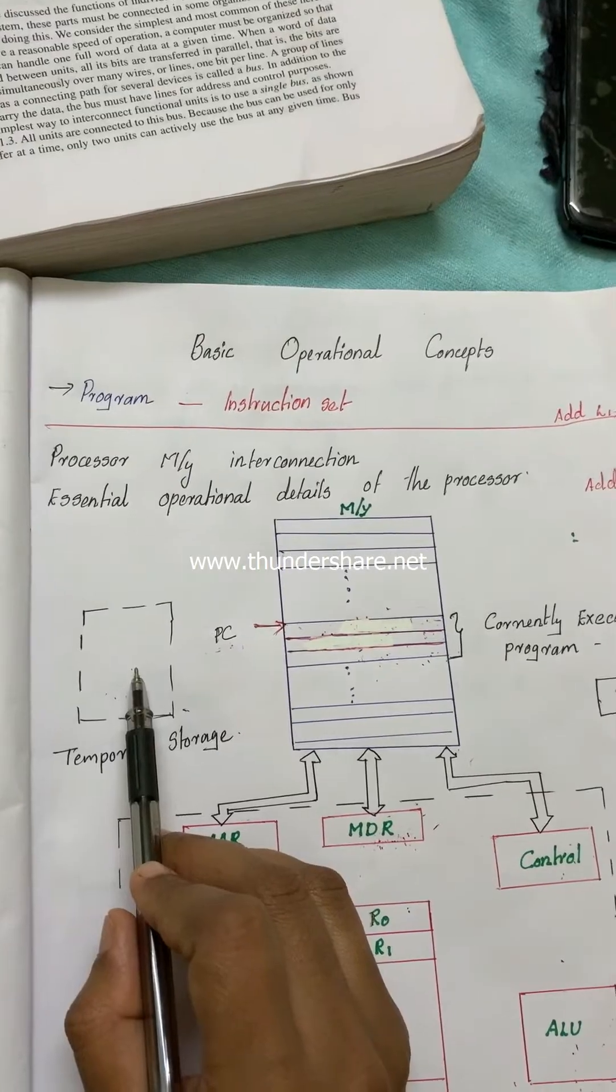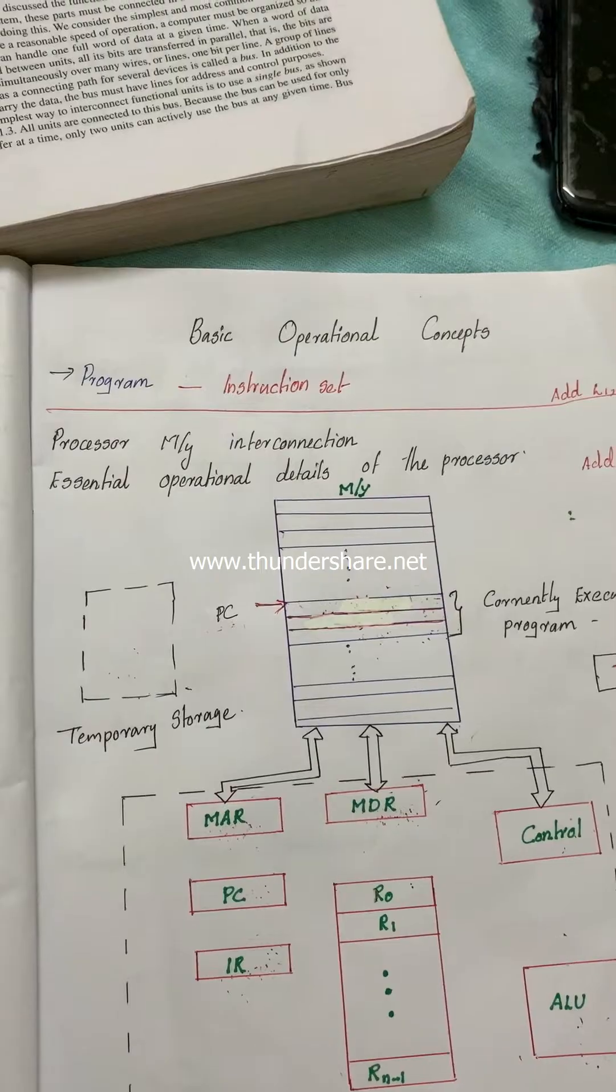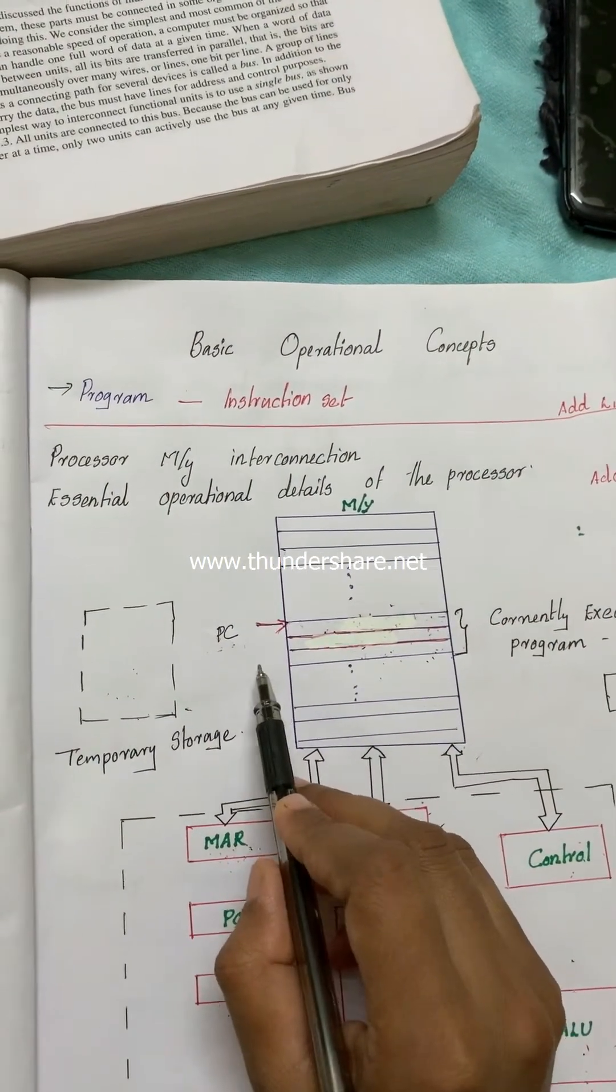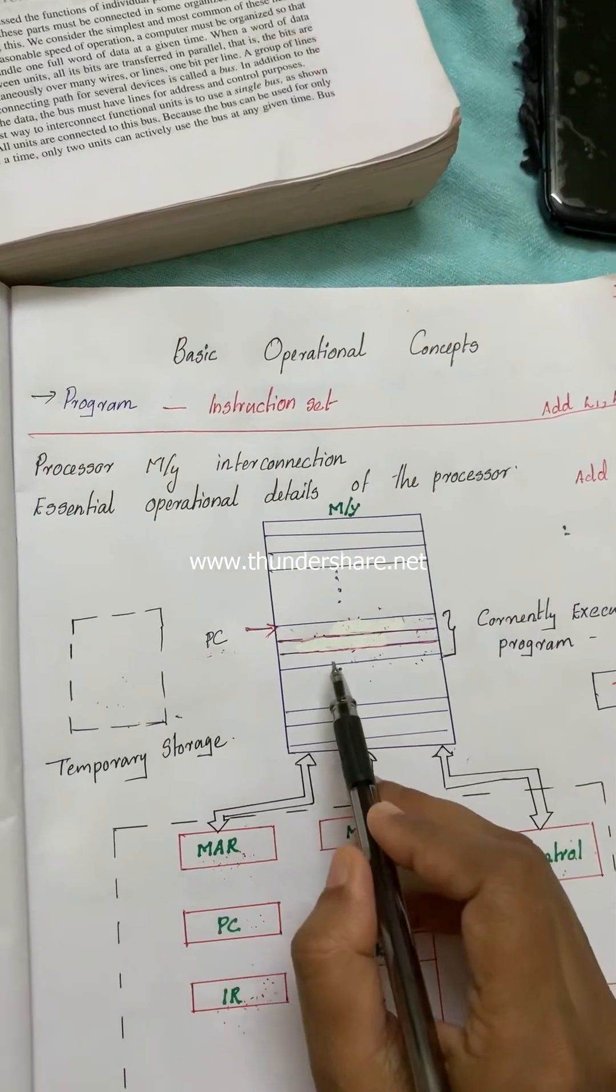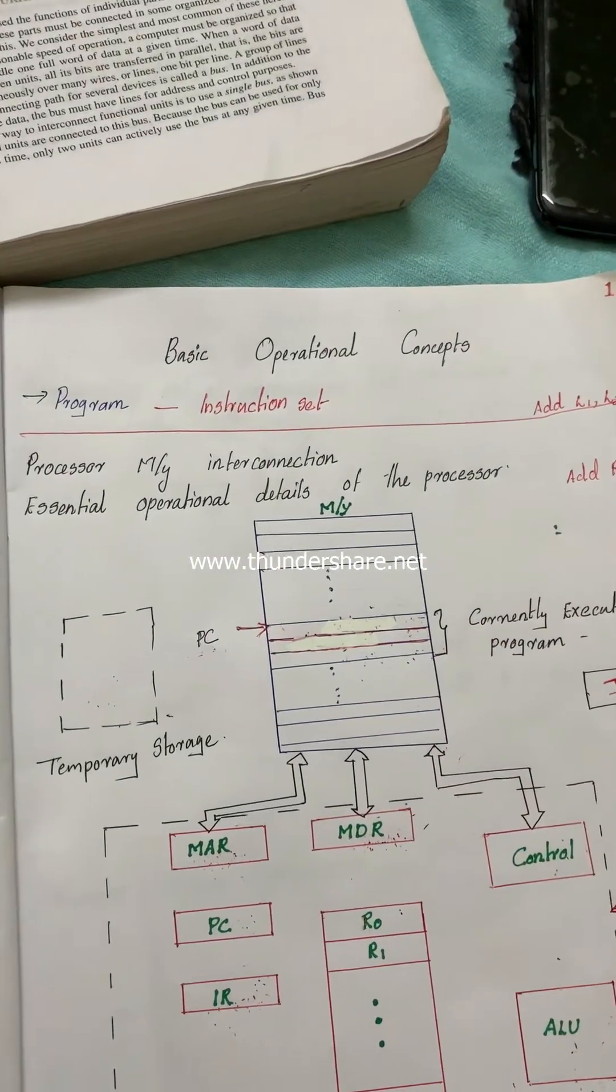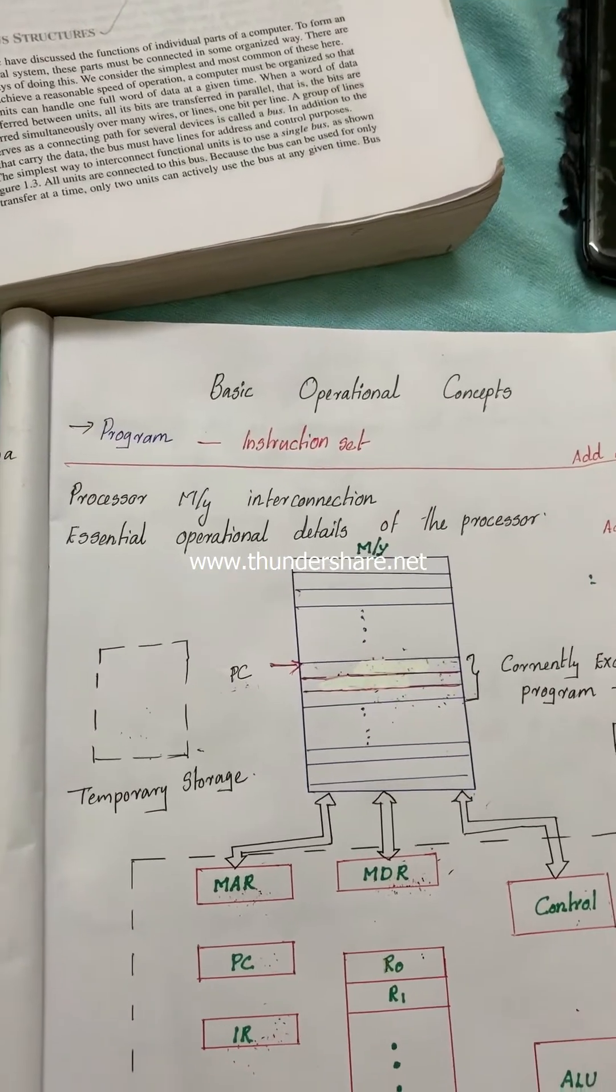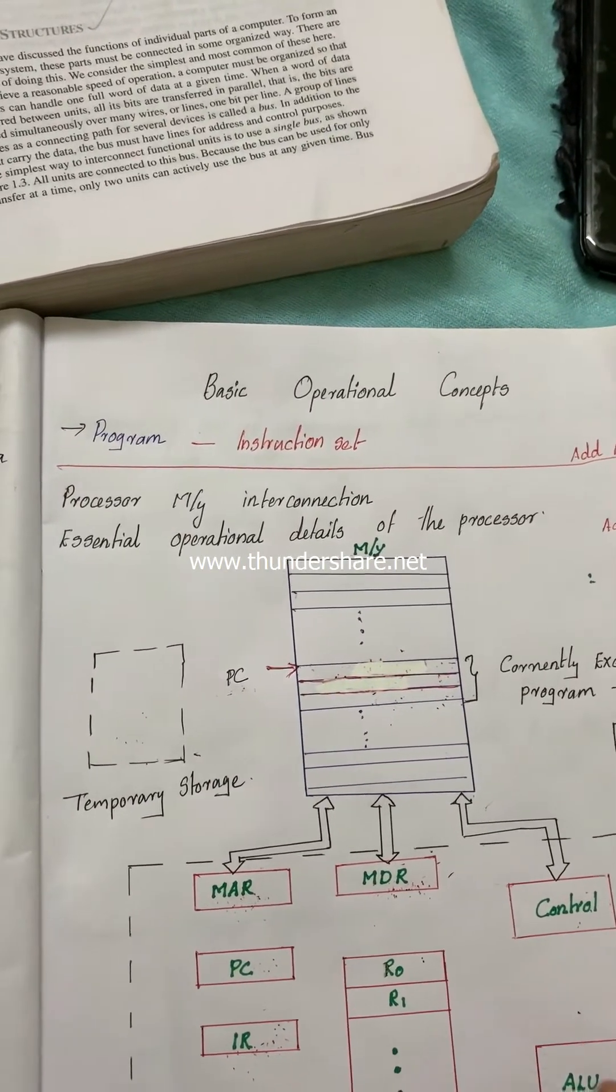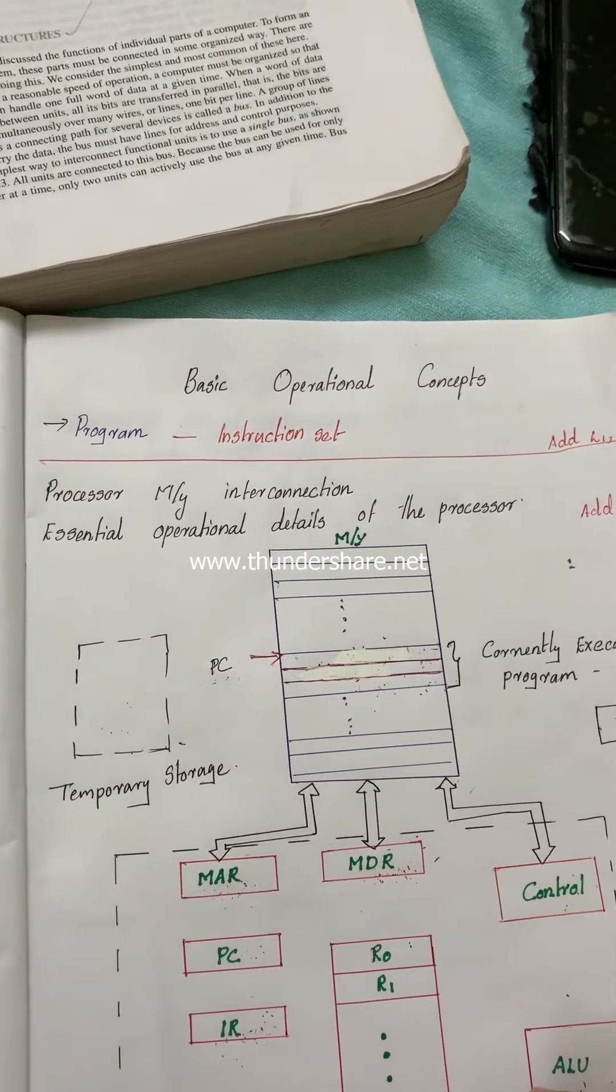So after completing the interrupt service routine execution, it checks the program counter value. It informs where the processor wants to continue the program execution. That means there's no need to start the execution of the program from the beginning. Just start the execution from where it stopped.